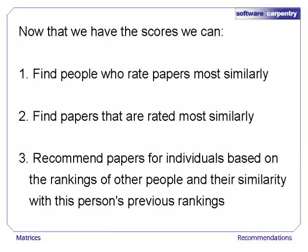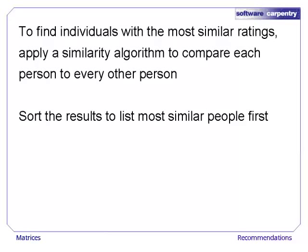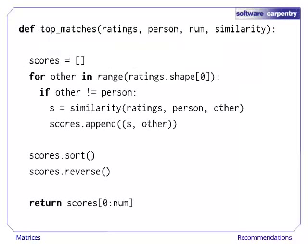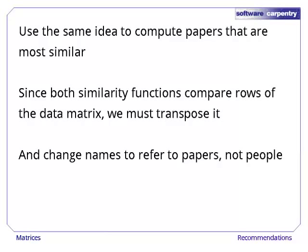It turns out that there are several ways to examine our dataset. We can look at how similarly two researchers view the literature, how similarly two papers are rated, or our original problem of what papers someone should read based on their ratings and the ratings of others in the dataset. If we want to find which individuals are most similar to a given person, we can apply either similarity metric to the rows of the array since each row is a single person. In code, the variable person lists the person for whom we want a list of similar individuals. For every other person, we compute the similarity score and append it to the list. Different similarity functions can be used by passing a different function into the method. Finally, we sort the list, which will use the first position in each tuple by default, and reverse it since the highest scores should be first. If we transpose our dataset, each row becomes a list of all ratings for a single paper. We can use the same code to find similar papers, but we need to be careful to list paper names rather than person names.